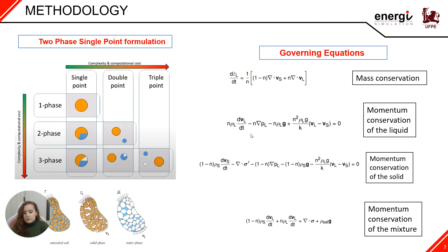The formulation type that we are using is the two-phase single point formulation. In this kind of formulation, we have only one set of material points that represents the mixture, which includes the solid and the liquid phase of the soil, and they move according to the displacement of the soil. Here are displayed the governing equations utilized in the two-phase single point formulation, which includes the mass conservation, the momentum conservation of the liquid, of the solid, and of the mixture.